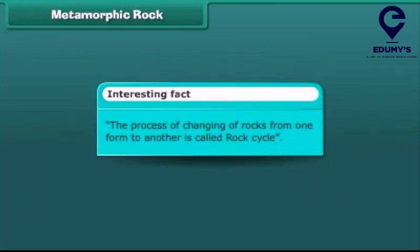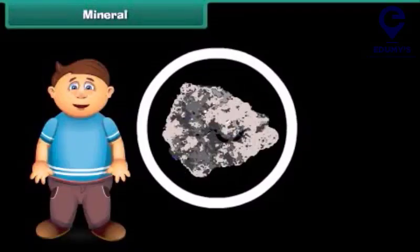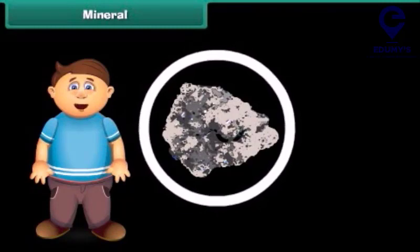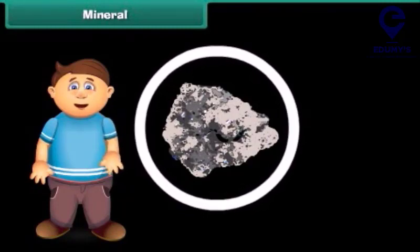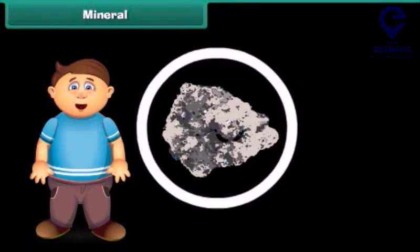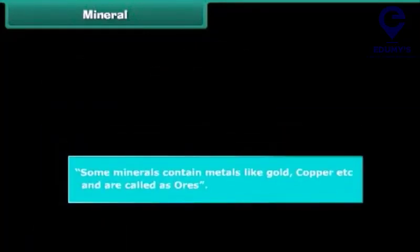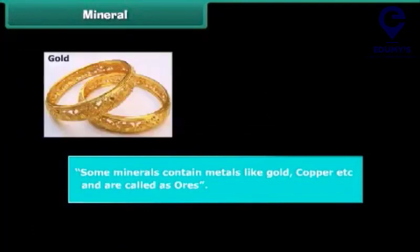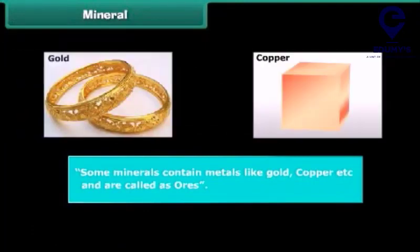The process of changing of rocks from one form to another is called the rock cycle. Now let's shift to minerals. Minerals are the materials from which rocks are formed. Minerals contain several important substances. Some minerals contain metals like gold and copper and are called ores. We get metals from these ores.